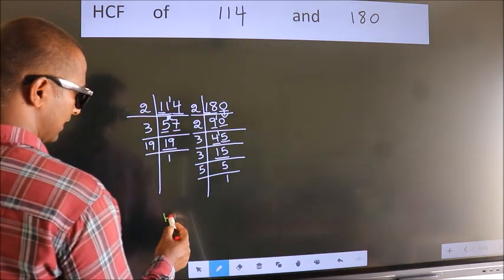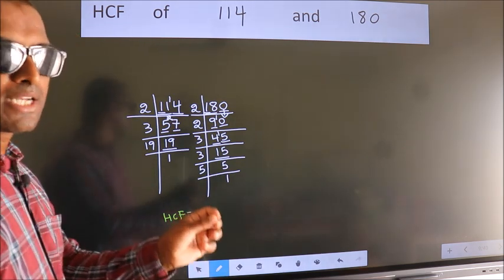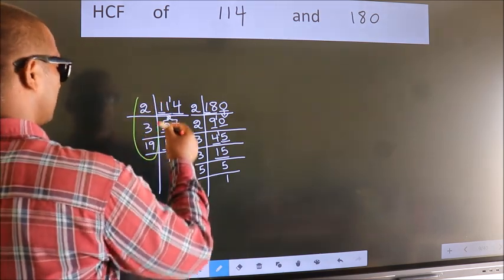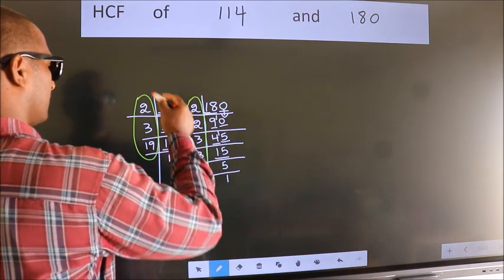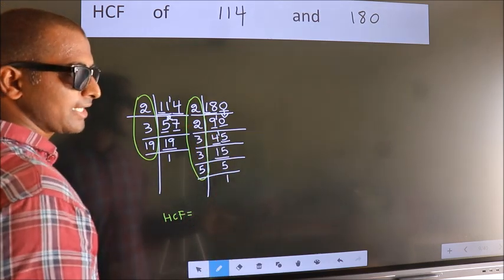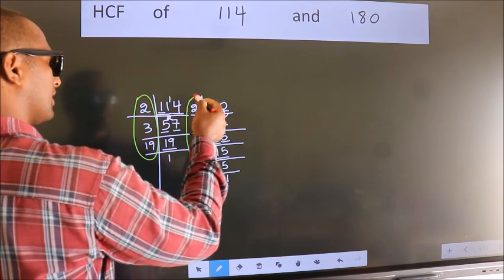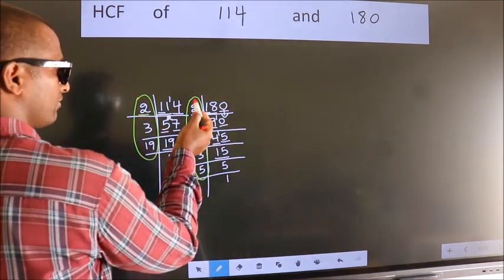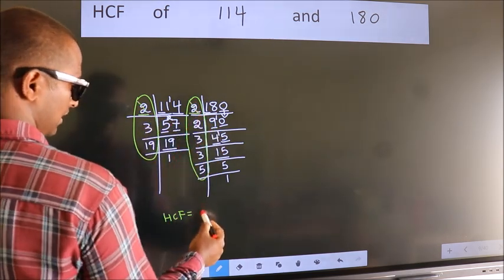Therefore, our HCF is the product of the numbers which should be present over here and also here. Over here and also here. So now let us find the numbers which should be present over here and also here. Starting with the number 2. Do we have 2 here? Yes. So cut 2 right here.